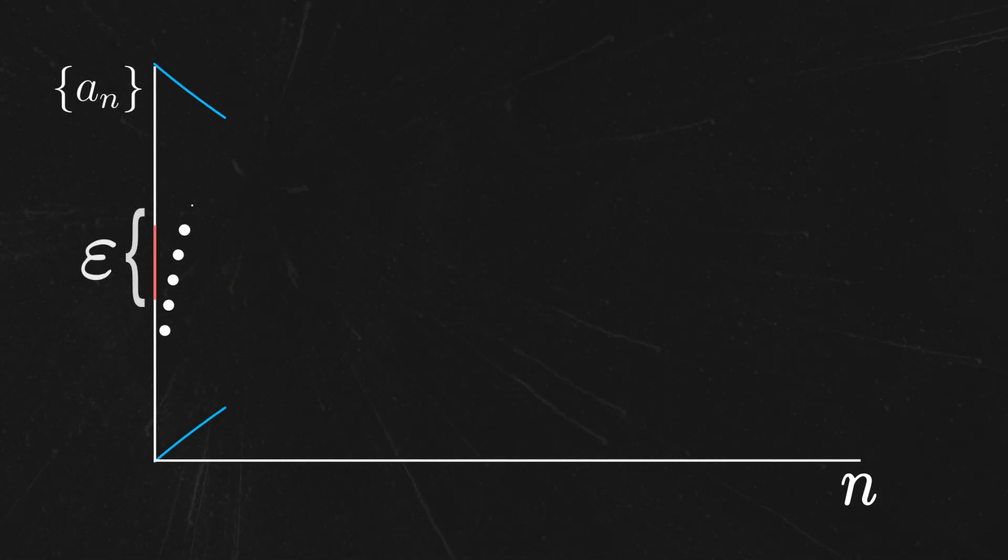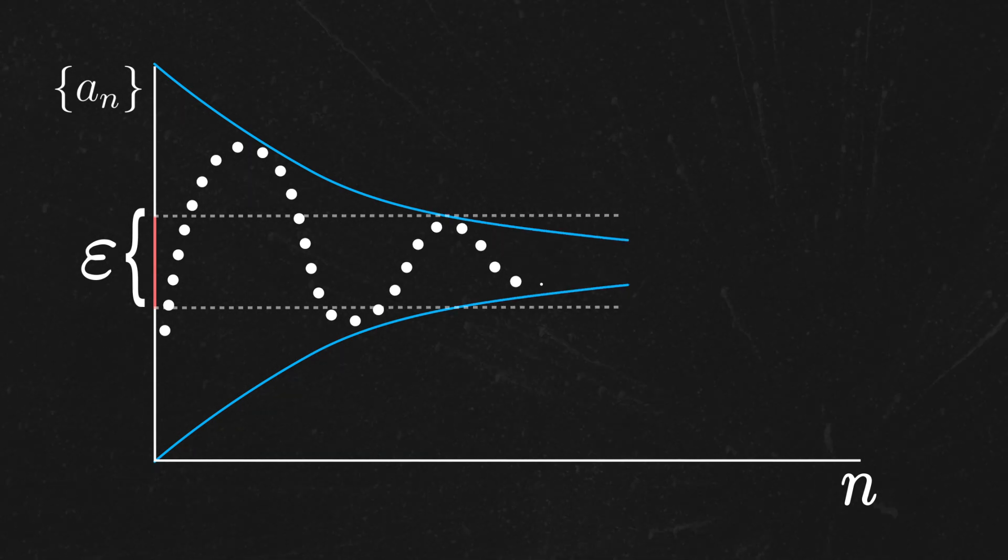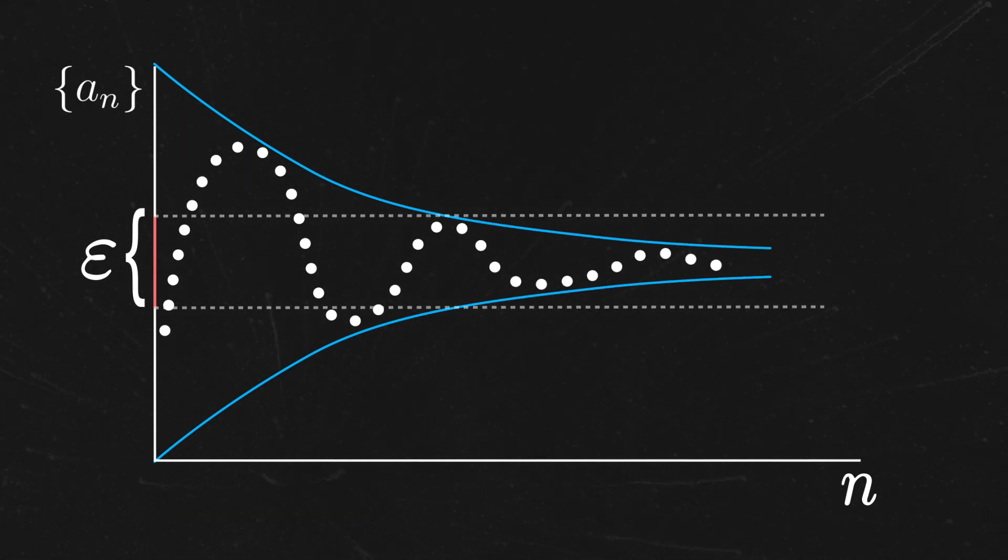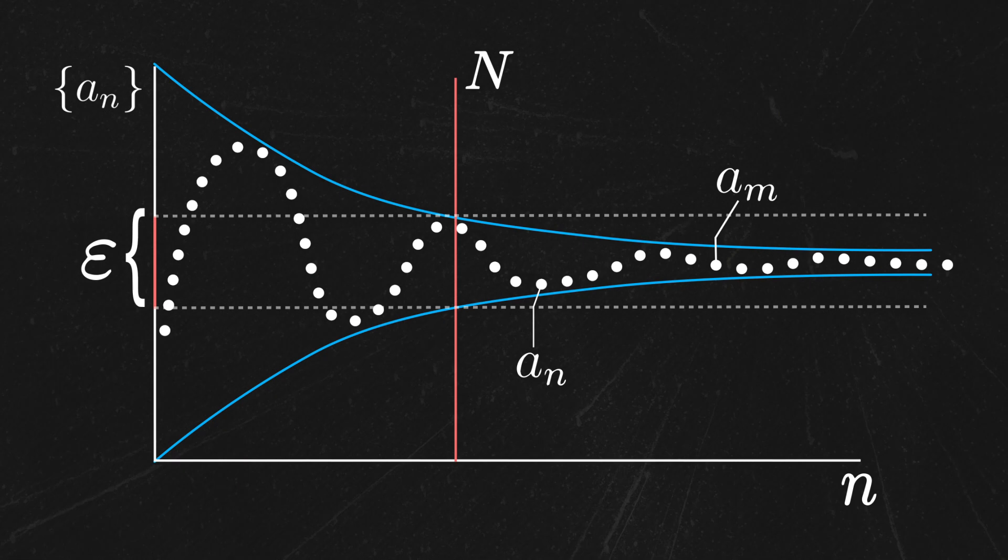Another way to put this is that given any fixed positive distance epsilon greater than zero, where here epsilon is a rational number since we have yet to define real numbers, all pairs of numbers a_n and a_m, beyond a certain capital N, have the property that their distance is less than epsilon.